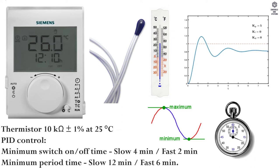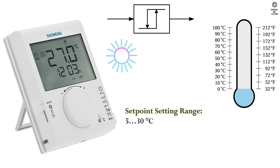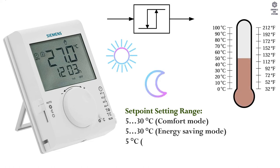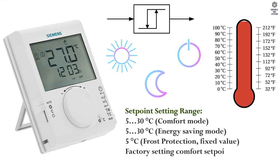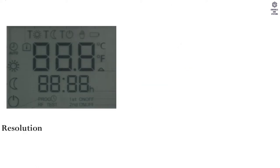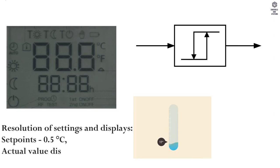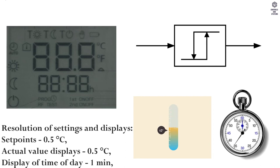Minimum period time: slow is 12 minutes, fast is 6 minutes. Set point setting range: comfort mode 5 to 30°C; energy saving mode 5°C; frost protection fixed value at 5°C. Factory setting comfort set point is 20°C; factory setting energy saving mode is 10°C. Resolution of settings and displays: set points 0.5°C, actual value display 0.5°C, time of day display 1 minute.